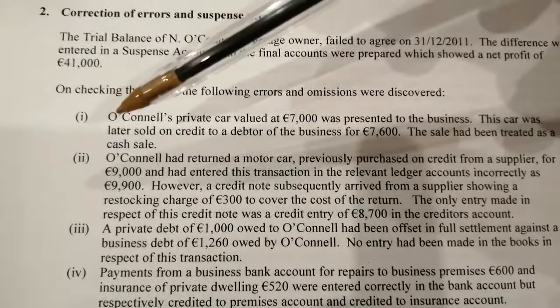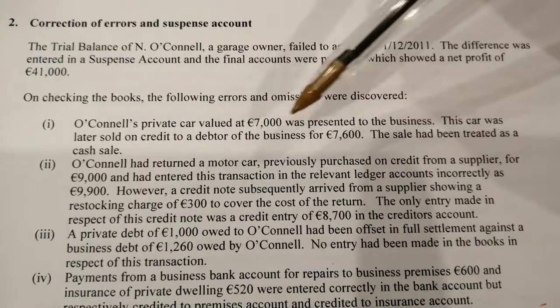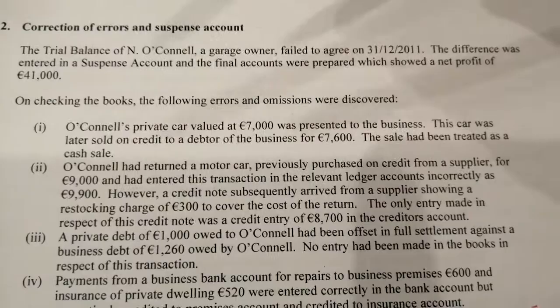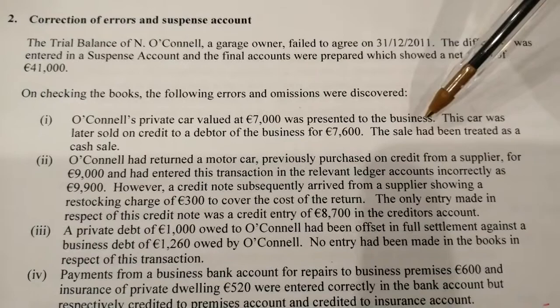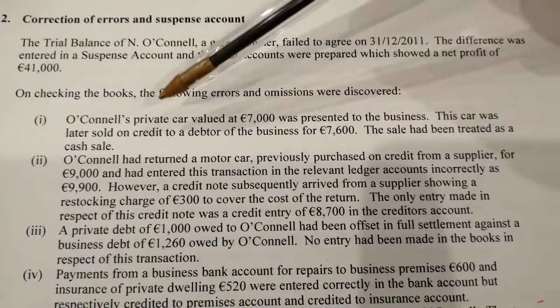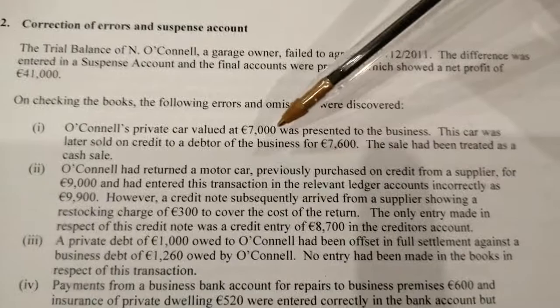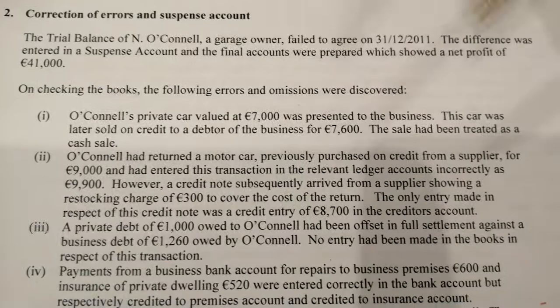This is the 2012 suspense account part one. O'Connell's private car valued at 7,000 was presented to the business. This is a bit of a red herring because you don't actually have to do anything with that - it doesn't say it wasn't entered in the books or was entered incorrectly. So you just assume it was presented to the business and put in the books fine. No need to do anything about the capital or the presenting of the car.